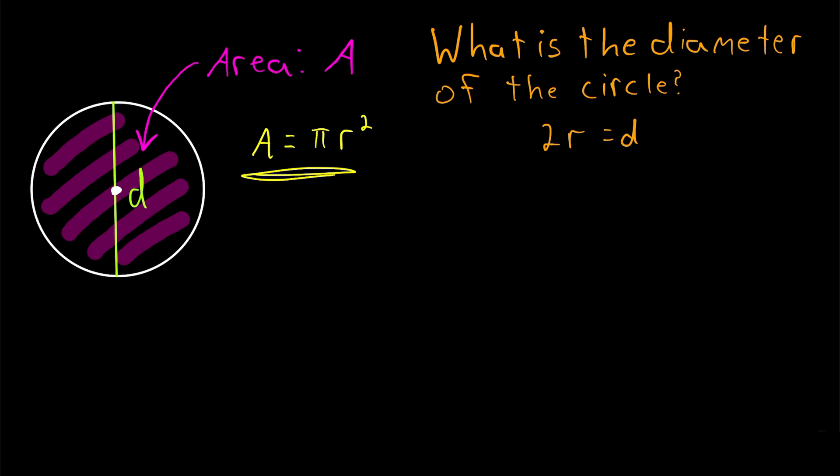So if we can solve this equation for r, the radius, then we've just got to double it and that will give us the diameter. So let's do it.